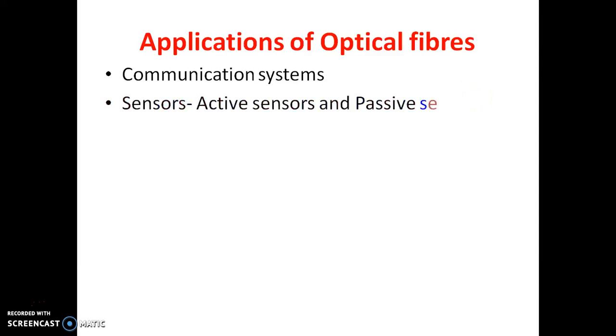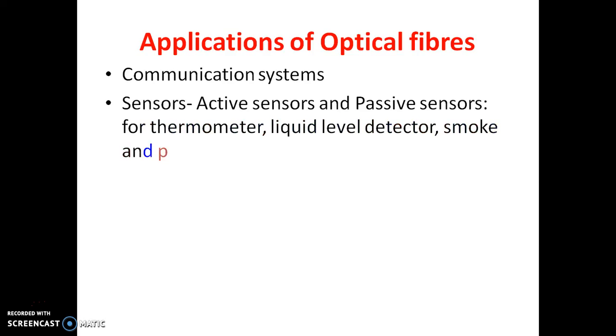Optical fibers are used as sensors. There are two types of sensors: active sensors and passive sensors. In active sensors, optical fibers change their intrinsic relative core-cladding difference and modify the output.